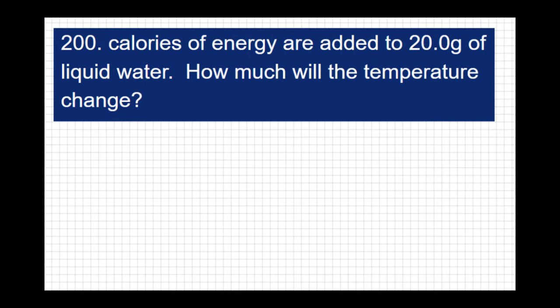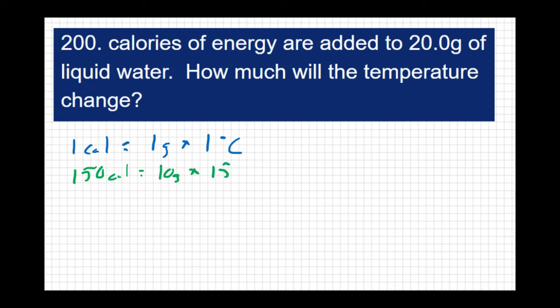Now we know by definition that 1 calorie is equivalent to 1 gram of water and 1 degree Celsius. In the previous question, we saw that 150 calories was equivalent to 10 grams of water times 15 degrees Celsius. This question is asking: if you have 200 calories and you are adding that to 20 grams of water, what's the temperature change going to be? Hopefully you can see from this pattern that by taking the mass times the change in temperature of the water, you will get the calories. So we're saying 200 equals 20 times X.